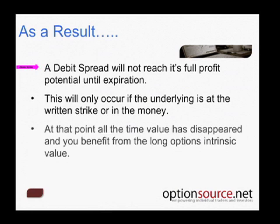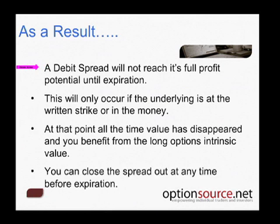This will only occur if the underlying pair value is at the strike or in the money. The reason is that at that point, all of the time value will have disappeared. All of the implied volatility premium that was factored into the option contract will have disappeared. You will only be left with the intrinsic value of your long call or long put option, and when you subtract the intrinsic value of your short call or short put, that leaves you with the spread differential — and your profits are the spread minus the premium that you paid.